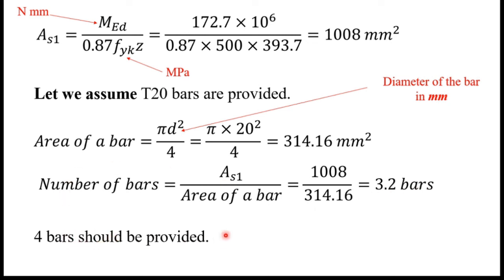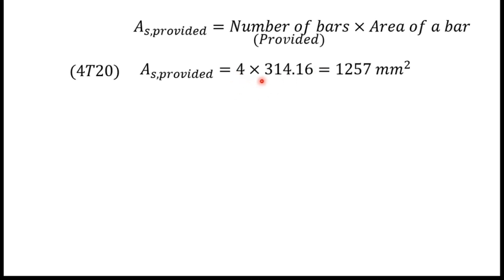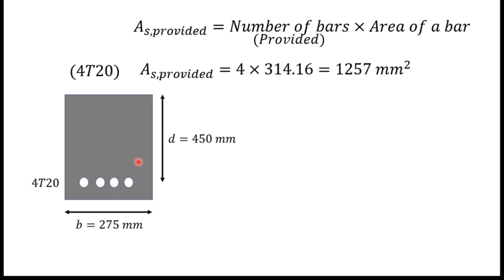The provided steel area AS,provided equals the number of bars provided times the area of one bar: 4 × 314.16 = 1257 square millimeters. We can now draw the cross-section of the concrete beam, showing the effective depth D = 450 mm and the breadth B = 275 mm, with 4T20 bars placed in the tension zone.